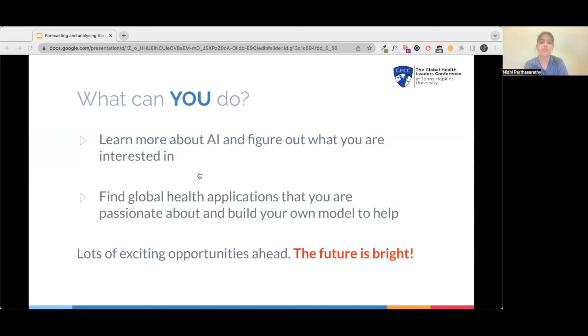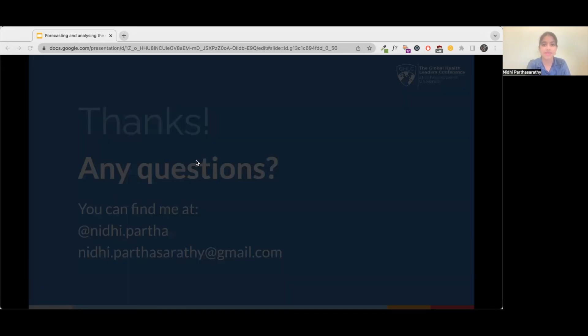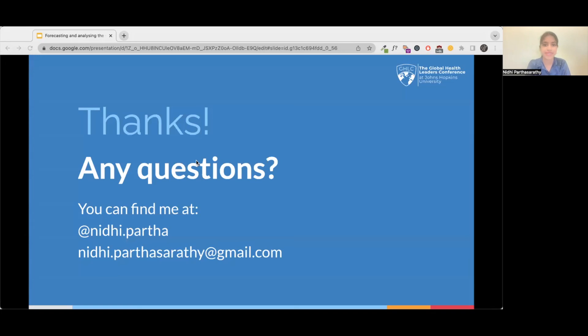So what can you do? You can learn more about AI and figure out what you're interested in. AI is such a broad area and there's so much that can be done from computer vision to robotics to healthcare. Try to find global health applications that you are passionate about and build your own model to help. There are so many exciting opportunities and the future is really bright. If you're looking for more information, I have listed several references you can follow up on. I'd like to thank GHLC for this opportunity to present. I'd also like to thank my teacher Christian and all my collaborators with whom I did this project because I couldn't have done it without them. I would also like to thank my family for all their support in my work. And finally, I'd like to thank all of you for listening to my presentation. It is a privilege to present to you all. If you have any questions, feel free to contact me at nidhi.parthasarathy@gmail.com. Thank you so much.